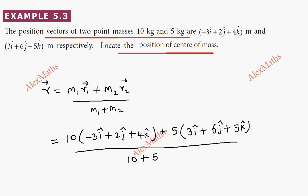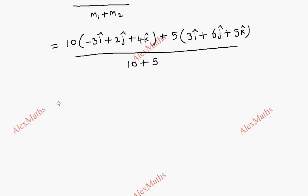Now, further simplification you can see. 10 multiplied gives minus 30i cap plus 20j cap plus 40k cap.